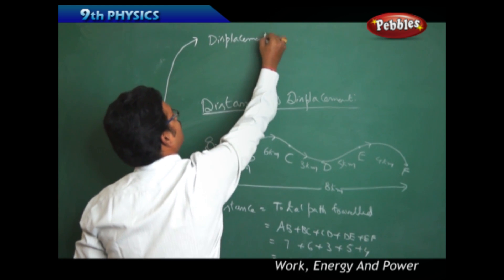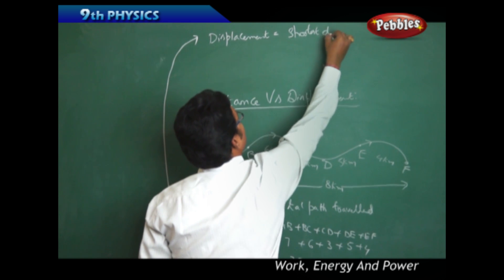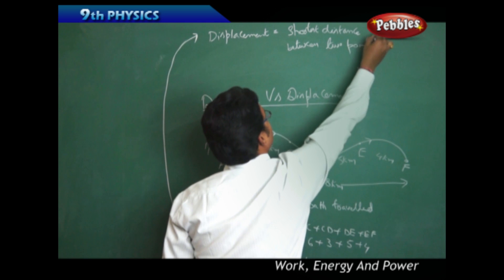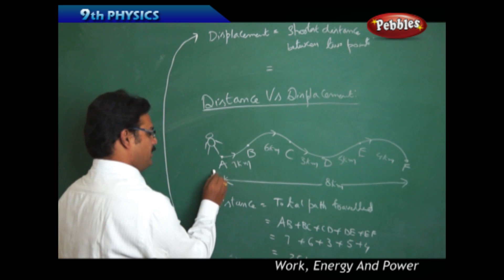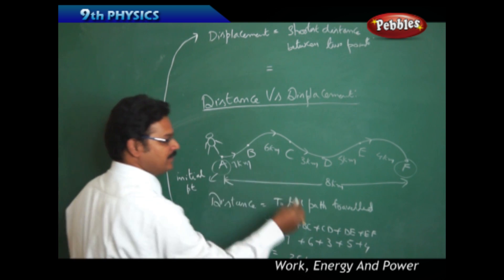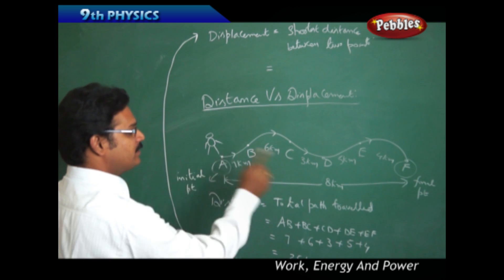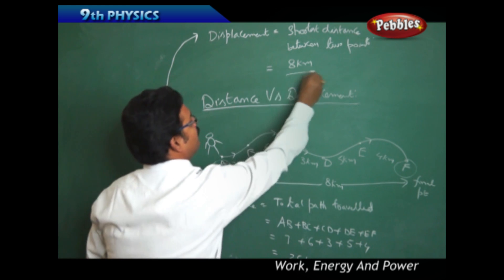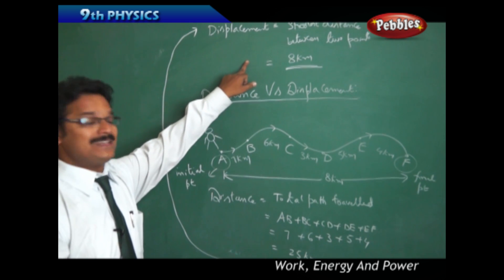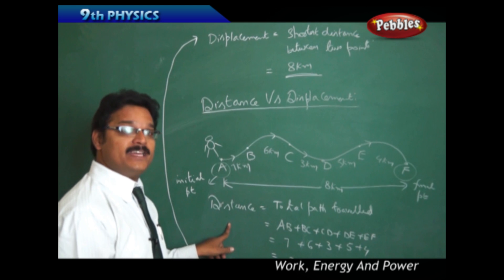Displacement is the shortest distance between two points — the initial point and the final point. In this example, the two points are A and F. A is the initial point and F is the final point. The shortest distance between them is 8 kilometers. So distance is 25 kilometers and displacement is 8 kilometers. Displacement is always less than distance because displacement takes the shortest path, whereas distance takes the total path traveled.